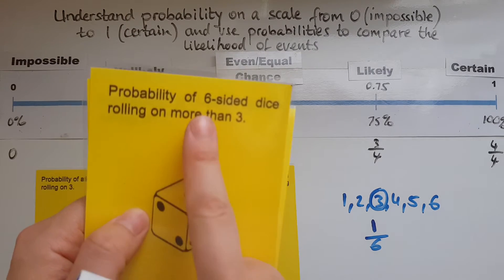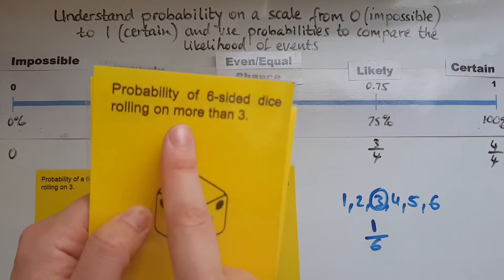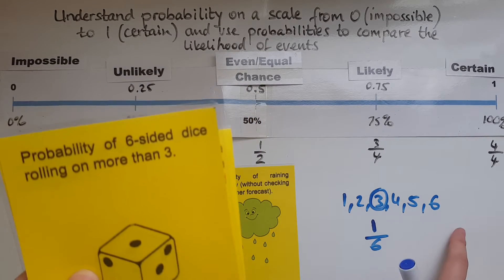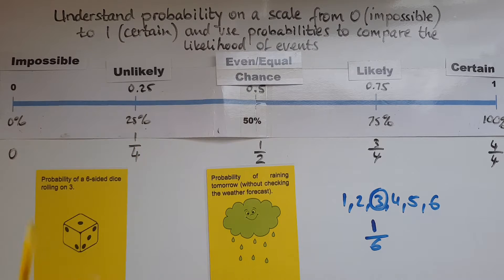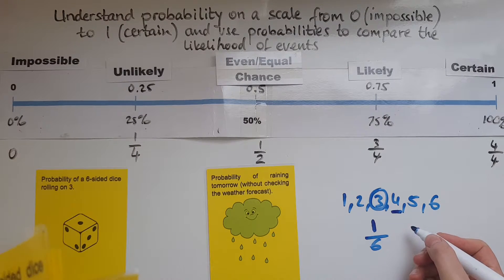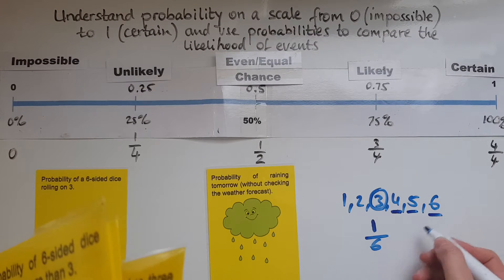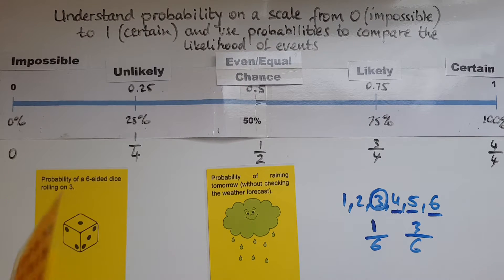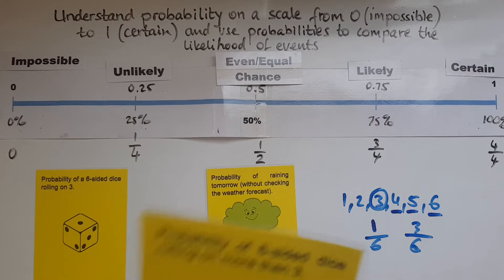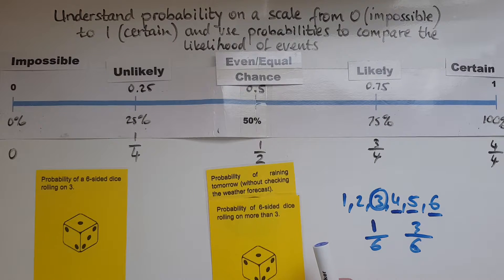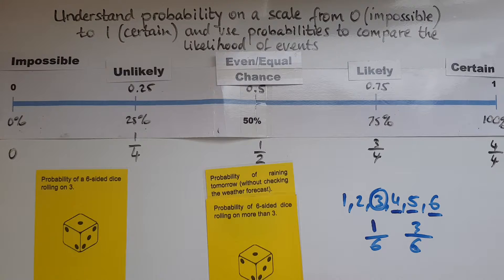Now the probability of a six-sided dice rolling on more than three. More than three means four, five, and six — three is not included. That's 3 out of 6 possible outcomes, which is the same as a half. So I would place this at the 50 percent mark on the scale.